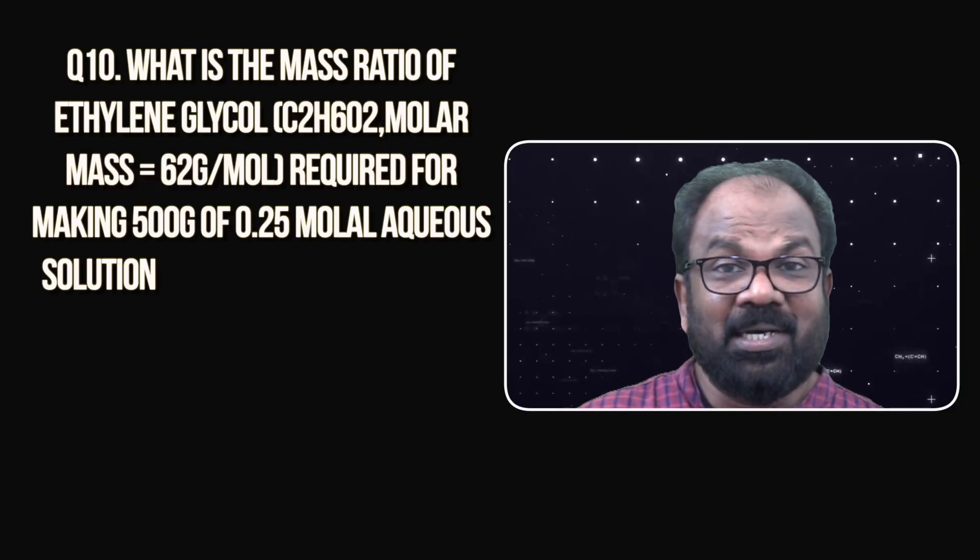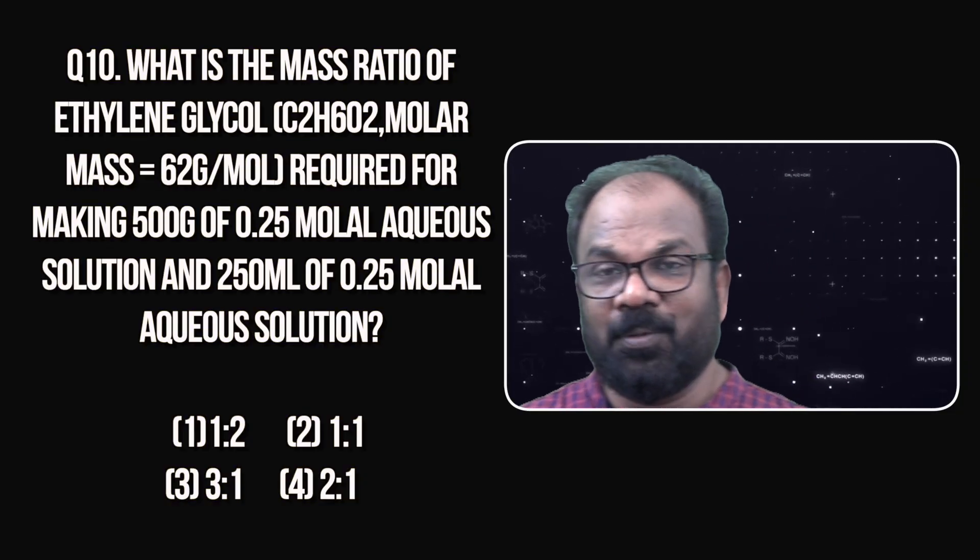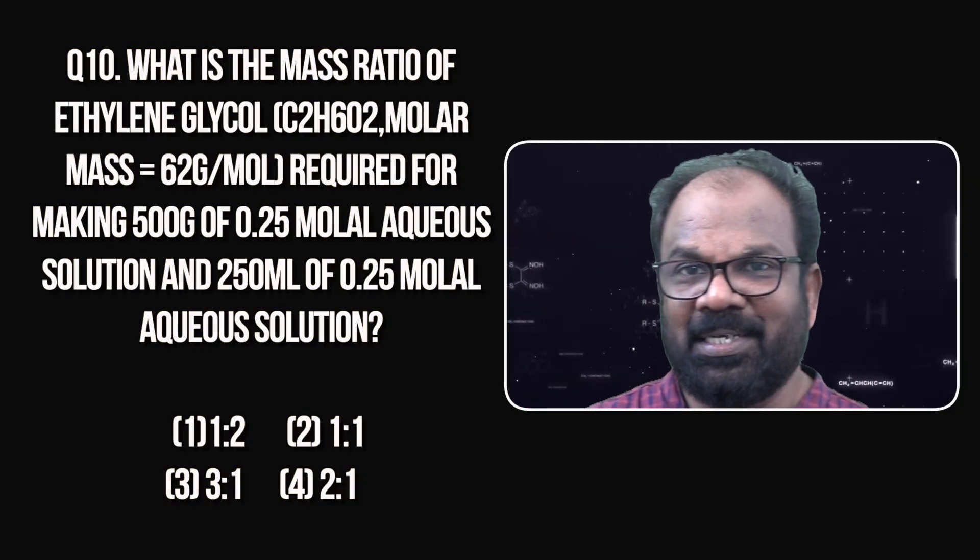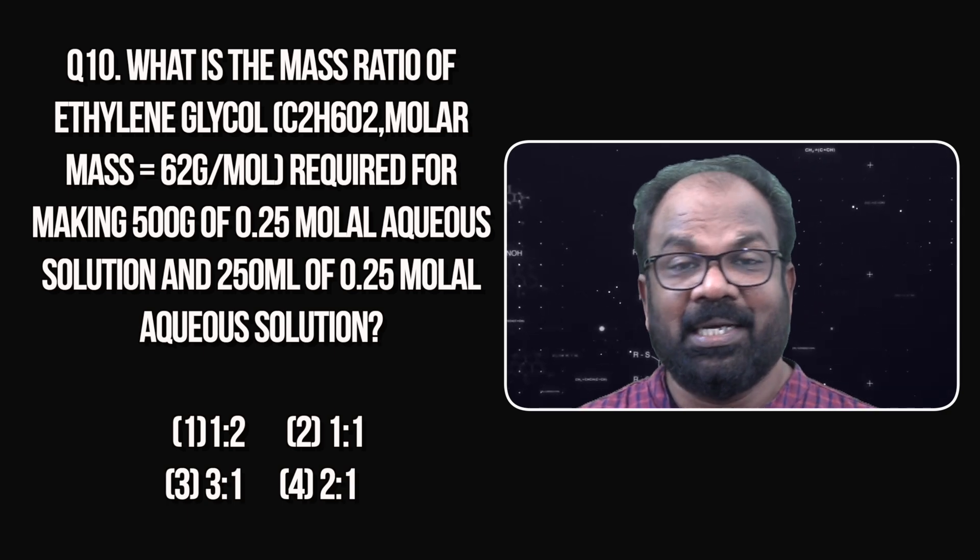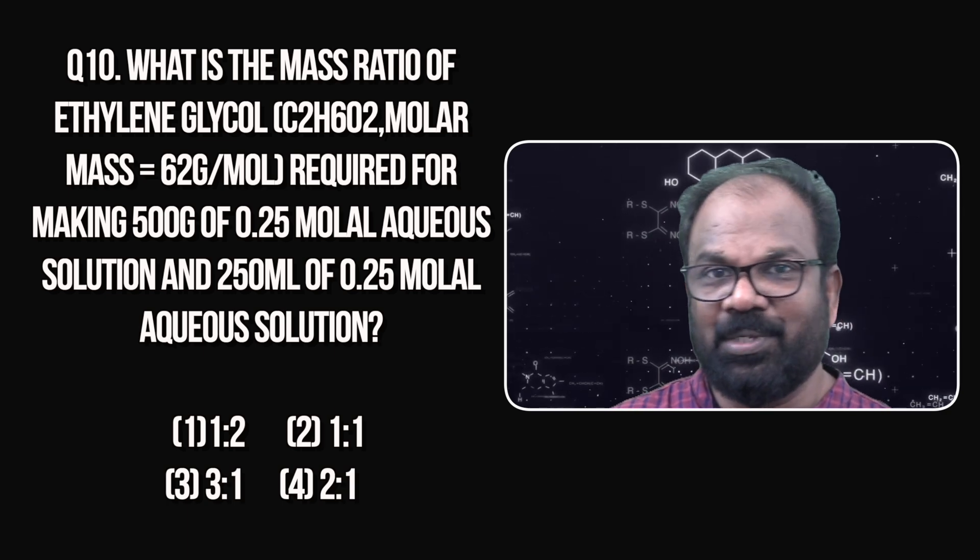Now question number 10, which is also a multiple choice question. The question is: what is the mass ratio of ethylene glycol? Its molecular formula is C2H6O2 and molecular mass is 62 grams per mole.